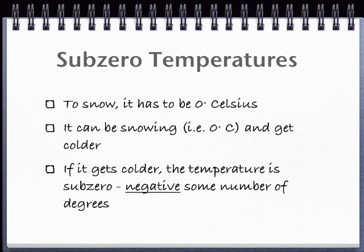But can it be snowy and still get colder? You bet. So that means it can get colder than zero degrees Celsius. If you've ever heard somebody talk about subzero temperatures, this is what they mean. The temperature is negative some amount of degrees. It's less than zero degrees.